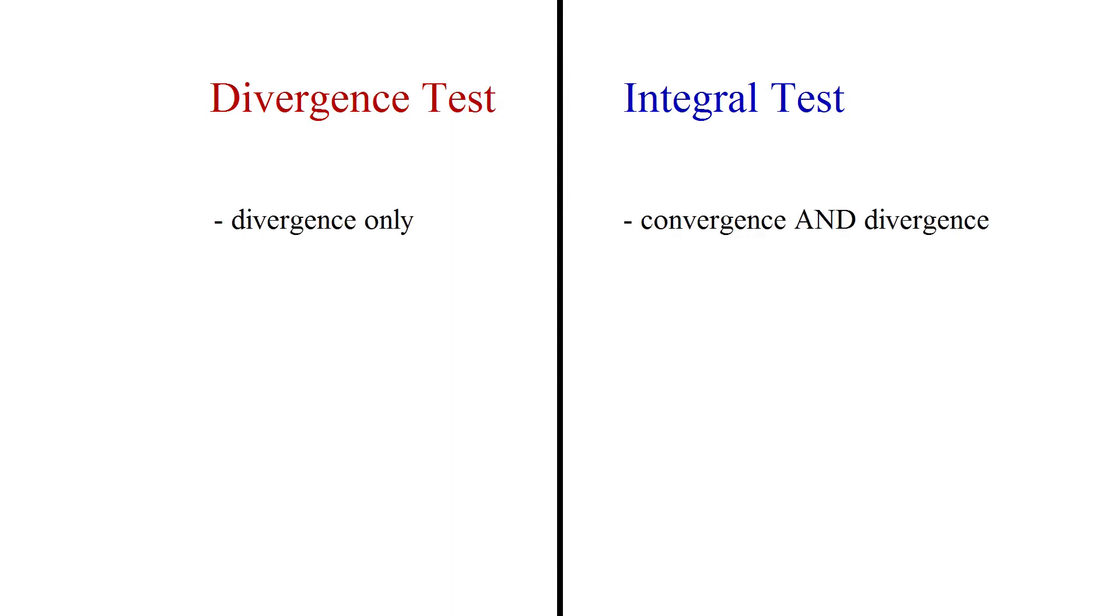The idea was instead of asking whether a series converges, we would turn the series into an analogous improper integral and ask whether that integral converges or not. The upshot was that evaluating an improper integral is generally easier than finding the sum of a series.